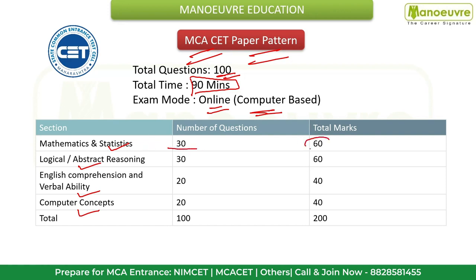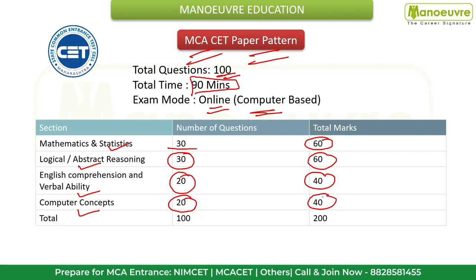Section-wise breakdown: Mathematics and Statistics — 30 questions, 60 marks. Logical and Abstract Reasoning — 30 questions, 30 marks. English Comprehension and Verbal Ability — 20 questions, 40 marks. Computer Concepts — 20 questions, 40 marks. The overall paper is of 200 marks with 100 total questions.